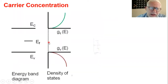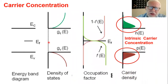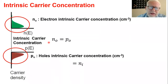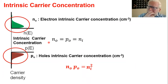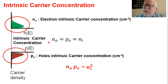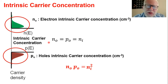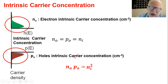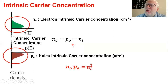From this relation, we have concluded the mass action law, which is very important in our study whenever the material or device is in thermodynamic equilibrium. It states that n0 times p0 equals ni squared. The subscript zero refers to what's called thermodynamic equilibrium.